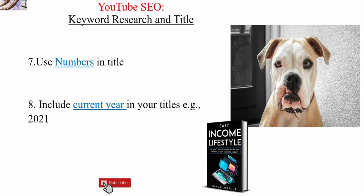Point number eight: include the current year in your title. Don't fear that if you say 'best cameras for YouTube videos in 2021,' then people won't want to watch it in 2022 or 2023. The good thing about YouTube is that it allows you to edit your title in subsequent years. If your title is 'best cameras for YouTube videos in 2021,' in 2023 you can simply change the title to 'best camera for YouTube videos in 2023.' So use the current year in your title.